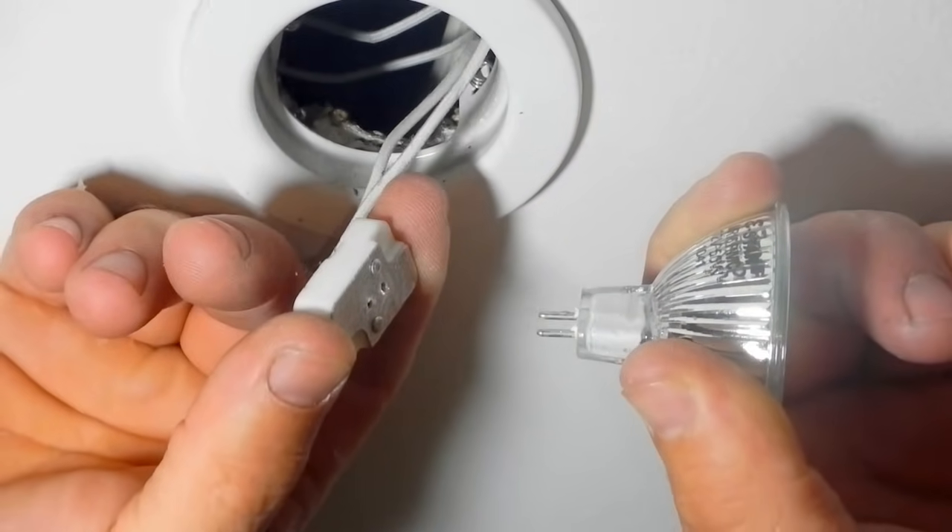Put down the circlip. Next, take the globe and with one hand holding on to the globe and one to the lead, gently wriggle apart until the globe has been dislodged.